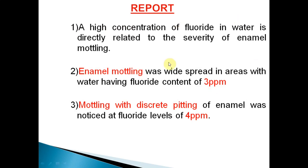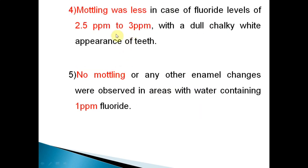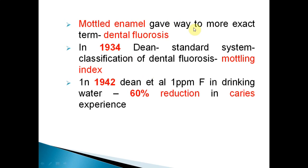The report showed that higher fluoride concentration in water is directly related to enamel mottling. Mottling was widespread in areas with water content more than 3 ppm, with discrete pitting above 4 ppm, whereas mottling was less at 2.5–3 ppm and no mottling was present at around 1 ppm. These conclusions caused mottled enamel to be renamed 'dental fluorosis.' In 1934, Dean standardized a classification of fluorosis known as Dean's Fluorosis Index, which was later modified in 1942.